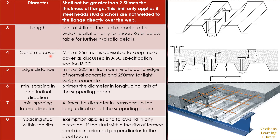The next condition is concrete cover, which is the distance from the top of the shear stud to the top of the reinforced concrete; this should be a minimum of 25 mm. Edge distance from the center of the shear stud to the edge of the concrete should be 203 mm for normal concrete and 250 mm for lightweight concrete. Spacing in the longitudinal direction should be a minimum of 6 times the diameter of the bar.